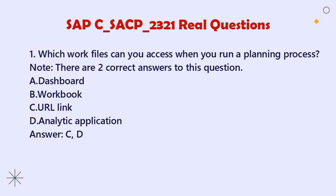Question 1: Which work files can you access when you run a planning process? Note: There are two correct answers. A. Dashboard. B. Workbook. C. URL link. D. Analytic application. Answer: C, D.